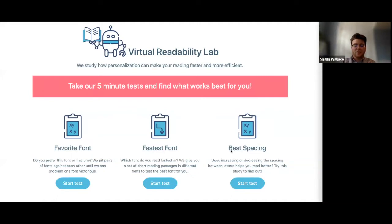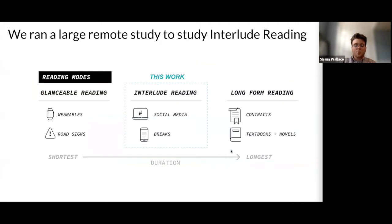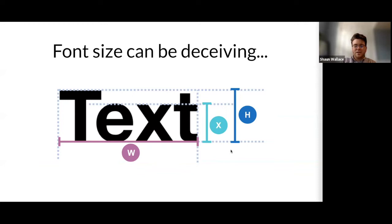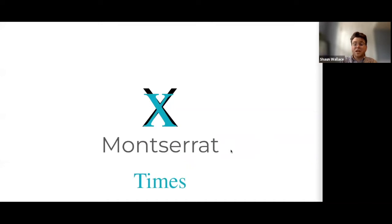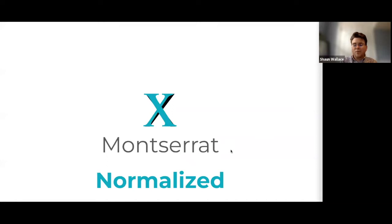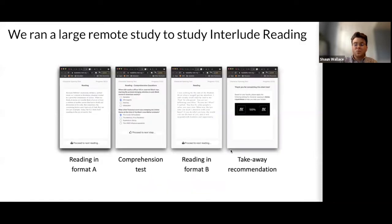This talk will focus on the initial research effort and results that helped create the VRL. Our open source tools and web apps were developed to run large remote studies to study interlude reading — a reading mode focusing on typical tasks such as reading forum posts or blogs. Previous research shows that font size matters, and people can perceive font size very differently. Before personalizing readability, we should first figure out how to better compare fonts. For a demonstration, let's focus on x-height — many fonts are designed to have a larger x-height than others. We can decrease Montserrat's size so its lowercase x matches Times. We had paid crowd workers vote on which normalization method worked best for each of our 16 fonts. We then used these normalized fonts to run a large remote readability study with participants mirroring the general digital reading population, average age 33, ranging from 18 to 71.